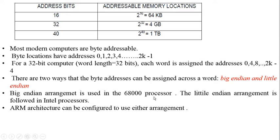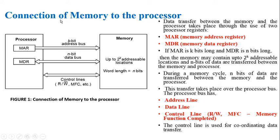ARM architecture can be configured to use either big endian or little endian arrangement. Next, about the connection of memory to the processor — various connection requirements exist to communicate memory with the processor. Data transfer between the memory and processor takes place through two special-purpose registers: MAR (Memory Address Register) and MDR (Memory Data Register).